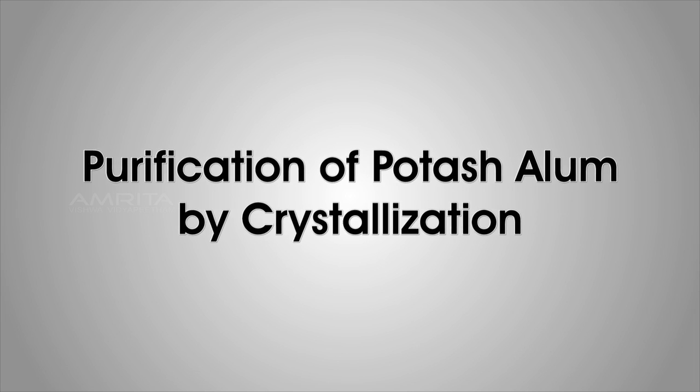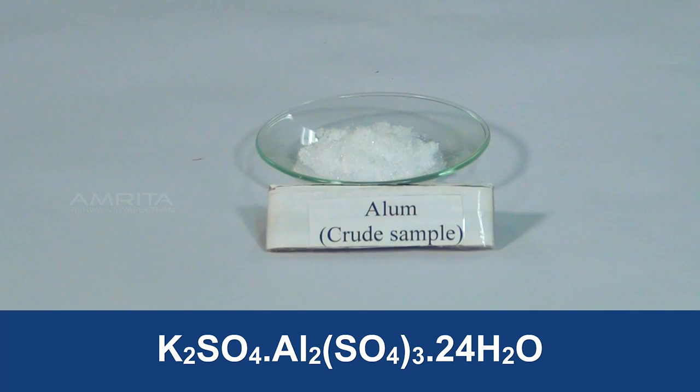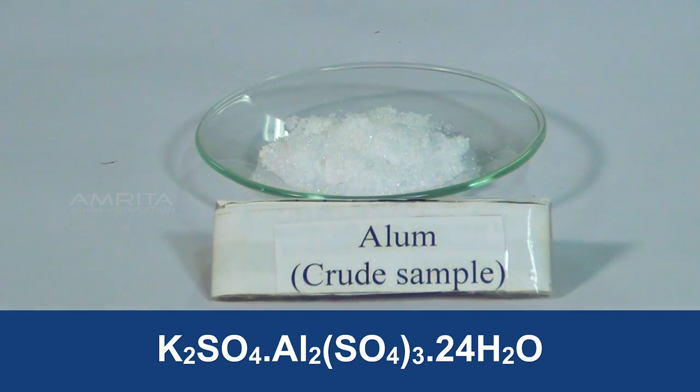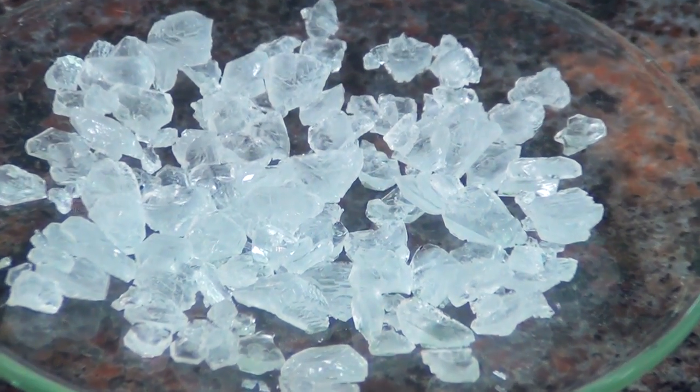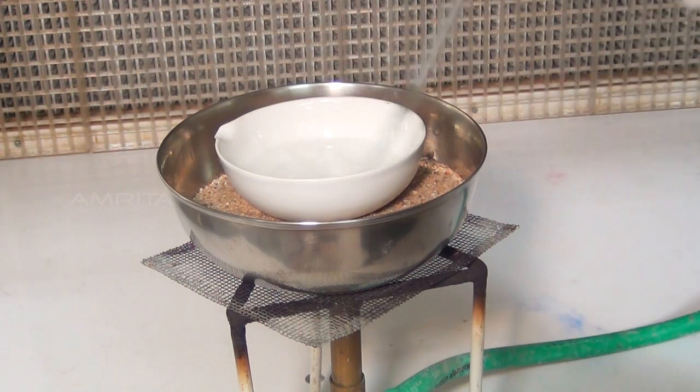Purification of Potash Alum by Crystallization. Potash alum is a double salt of potassium sulphate and aluminium sulphate. We can make pure crystals of Potash Alum by the process called crystallization.